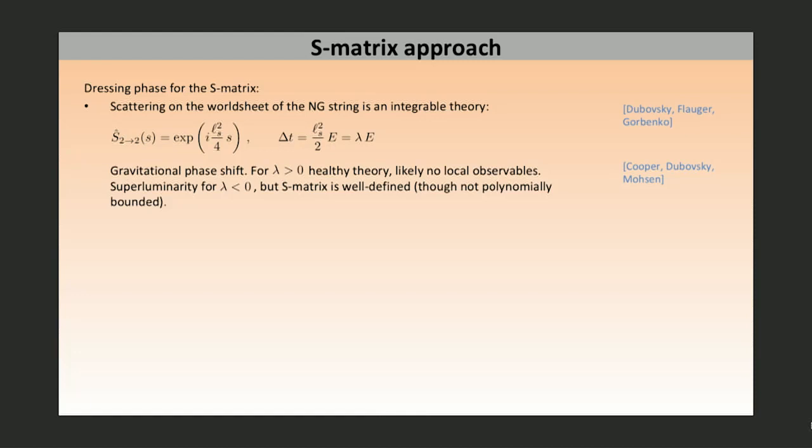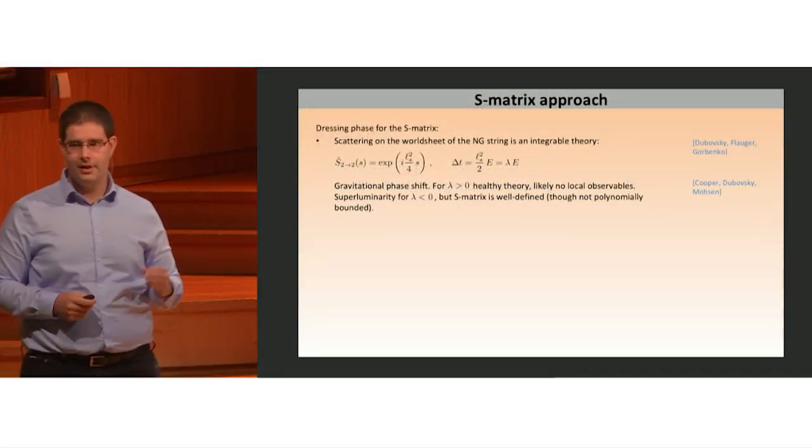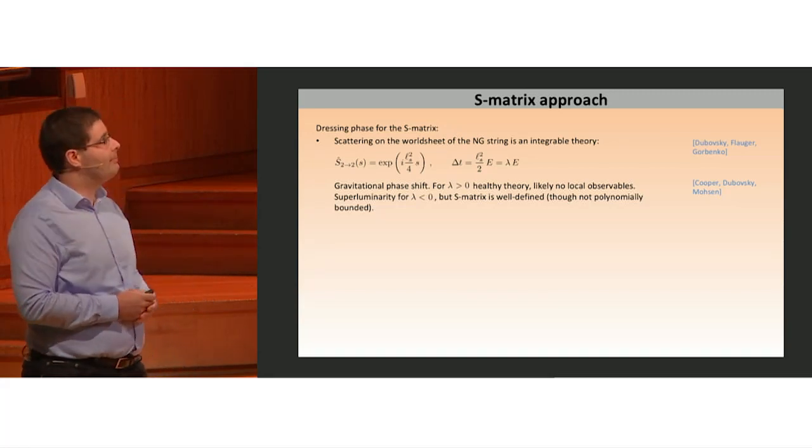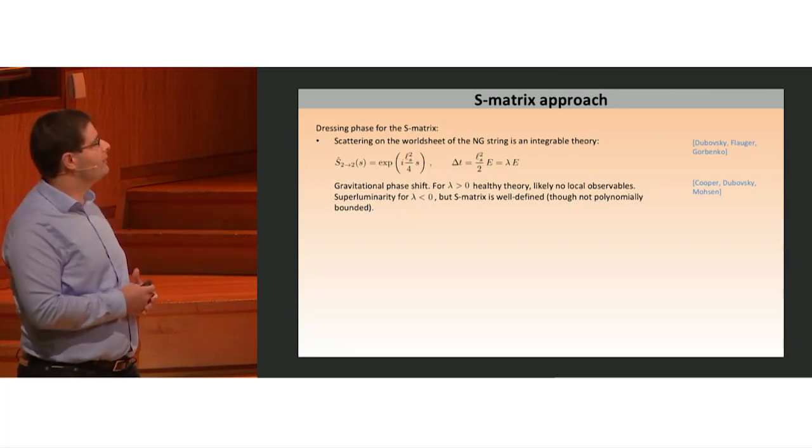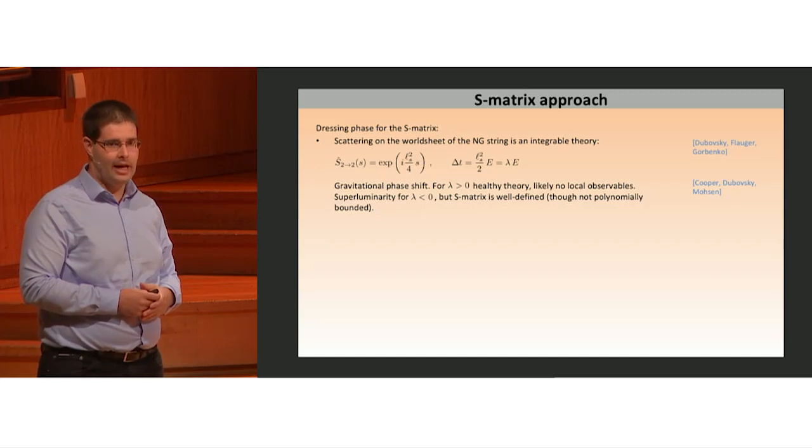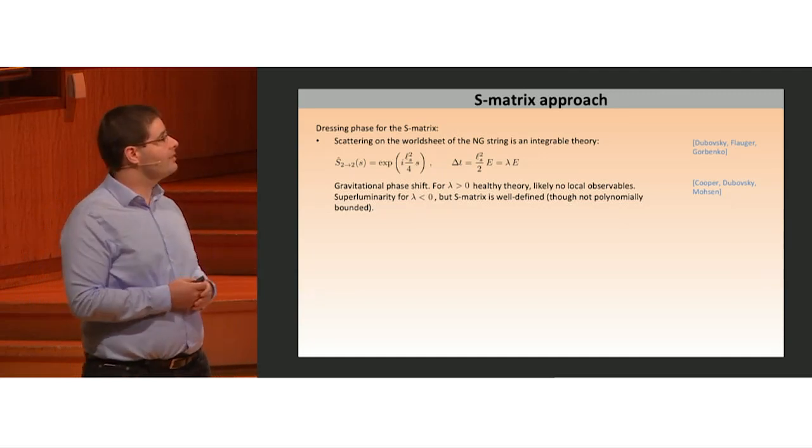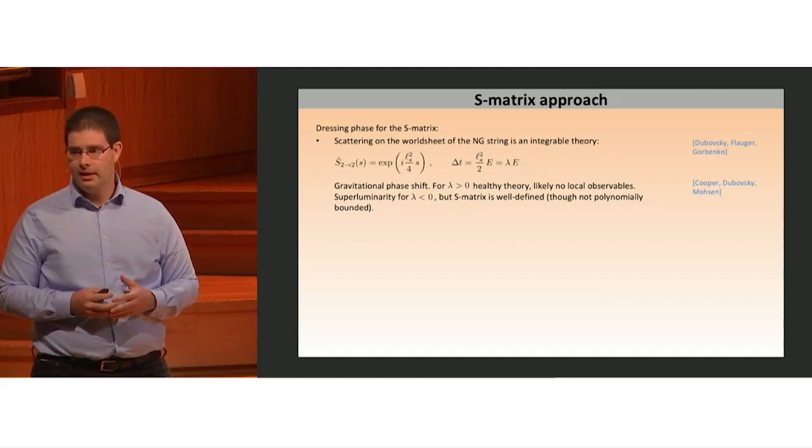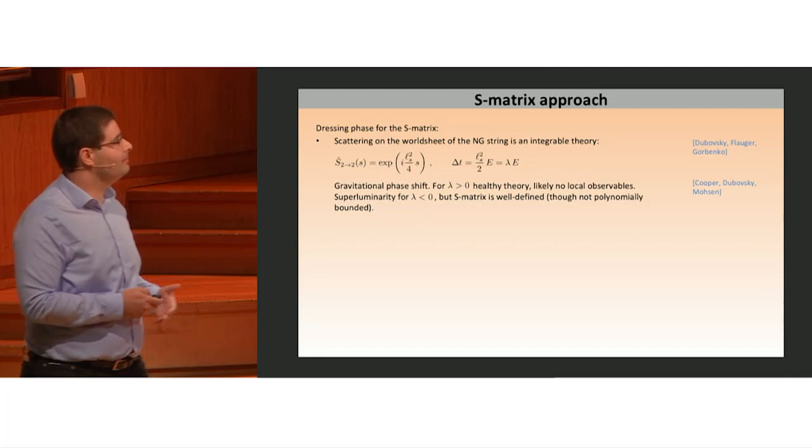In a parallel development, Dubovsky, Flauger, and Gorbenko were studying the scattering on the worldsheet of a Nambu-Goto string. It's an integrable theory, and they found this S-matrix - a pure phase with a phase shift growing linearly with Mandelstam S, and correspondingly we get the universal time delay formula proportional to the energy. These share features with gravitational scattering. For positive lambda we get a healthy theory, but because of the essential singularity on the complex S-plane, it likely has no local observables, whereas for lambda smaller than zero, we still have a well-defined S-matrix but with time-advance and superluminality.